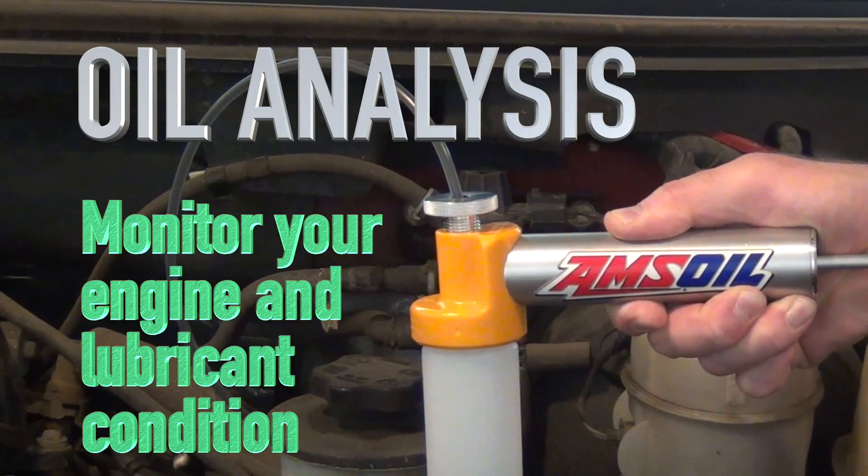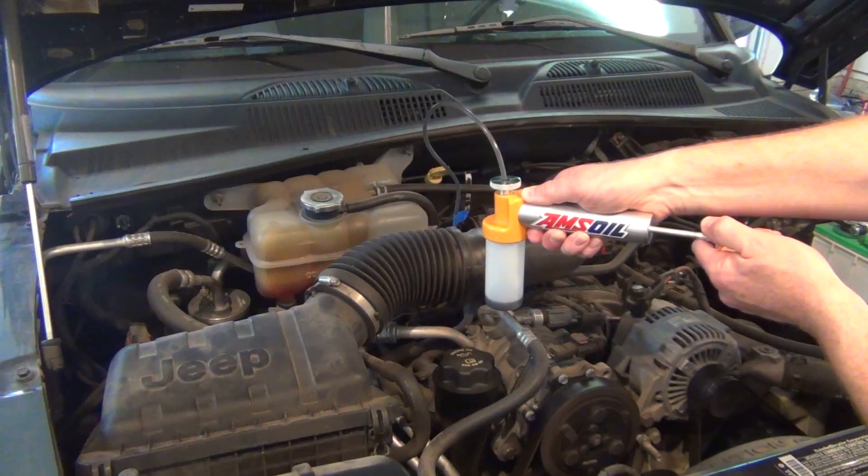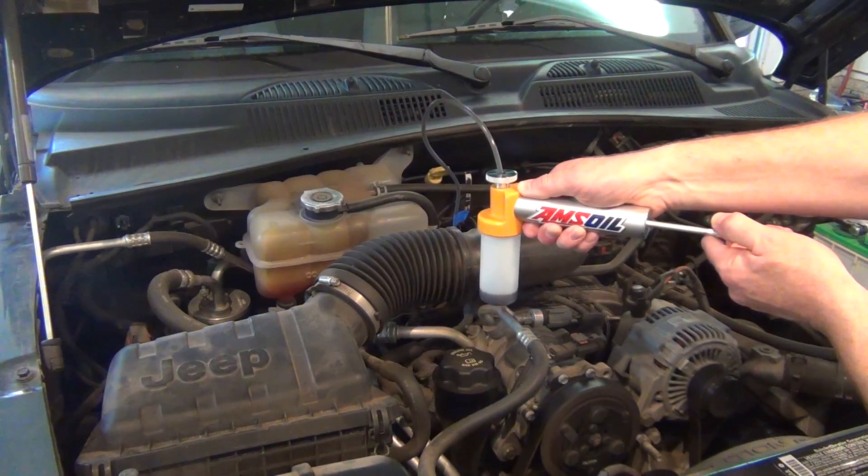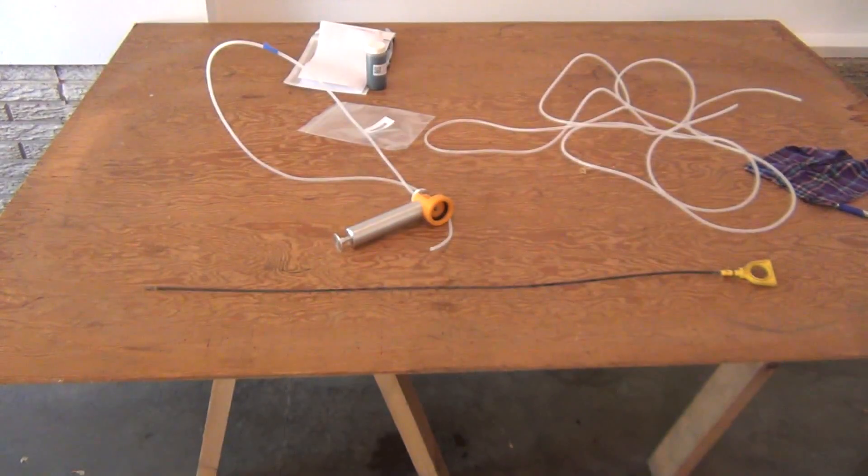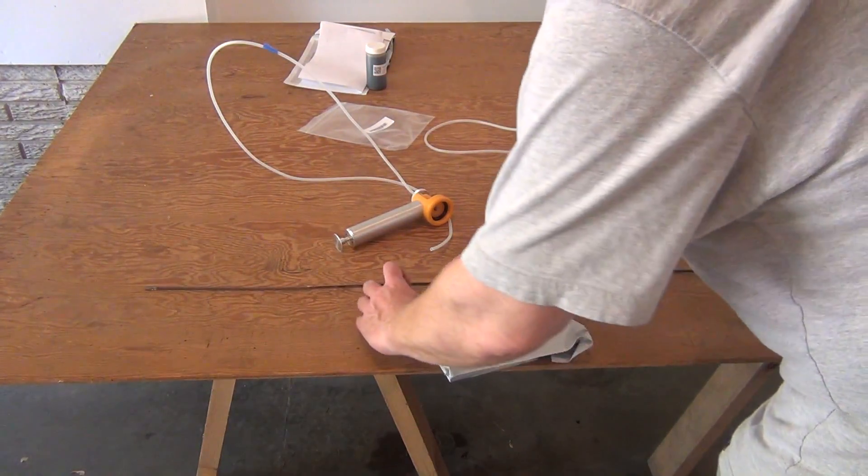In this video, we'll walk through the process of taking an oil sample from a Ford F-150 and a Jeep Liberty. The procedure will be similar for almost any engine with a dipstick.